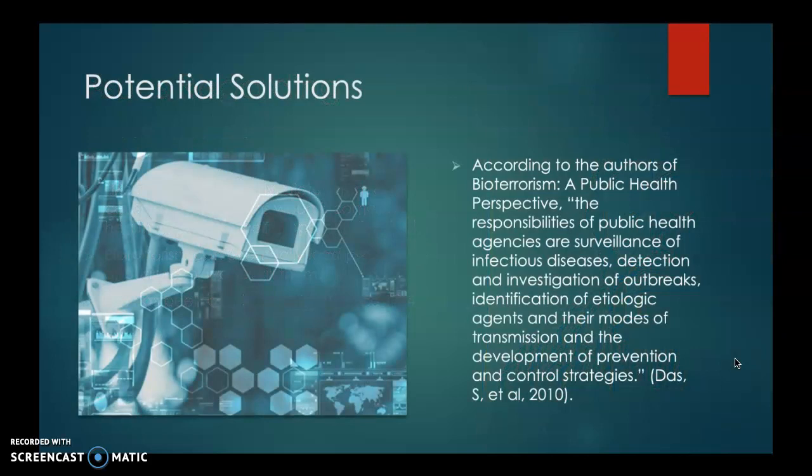Potential solutions: According to the authors of Biotourism: A Public Health Perspective, the responsibilities of public health agencies are surveillance of infectious disease, detection and investigation of outbreaks, identification of etiological agents and their modes of transmission, and the development of prevention and control strategies. When I was researching the topic of biotourism, there were two major solutions that popped up: one was the detection program, and the other one was a prevention program, which are kind of the same thing. They both go hand in hand, trying to prevent biotourism or at least detect when a deadly pathogen is about to attack.